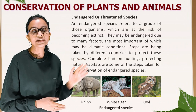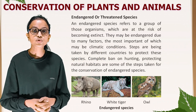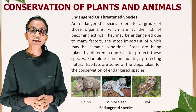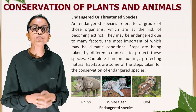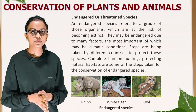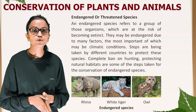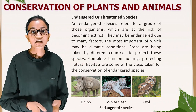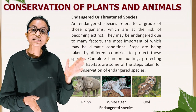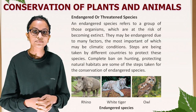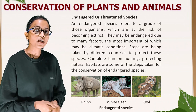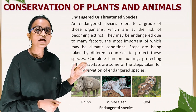Endangered or threatened species: an endangered species refers to a group of organisms which are at the risk of becoming extinct. They may be endangered due to many factors, the most important of which may be climatic conditions. Steps are being taken by different countries to protect these species — complete ban on hunting and protecting natural habitats are some steps taken. The pictures shown here are of rhino, white tiger and owl.